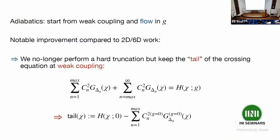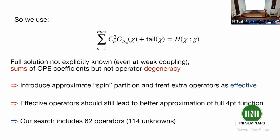We use an adiabatic approach: starting from zero coupling and flowing in the 't Hooft coupling G. One improvement over previous work is that instead of a hard cutoff of the OPE sum, we now approximate the tail. At zero coupling one can compute this tail explicitly, and the assumption is that it doesn't change significantly as you vary the marginal deformation. This approximation turns out to be a good one and significantly improves our results. We include 62 operators, giving 114 unknowns, with the primary interest being the OPE coefficients of the first three long operators.